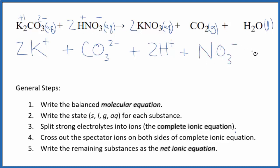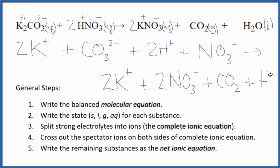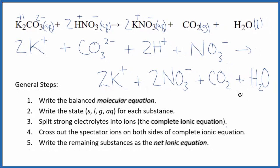Now the products: potassium has plus and nitrate minus, so two potassium ions just like the reactants, plus two nitrate ions. And then for gases and liquids we don't split those apart, so we'll have our CO2 plus our H2O. This is the complete ionic equation.